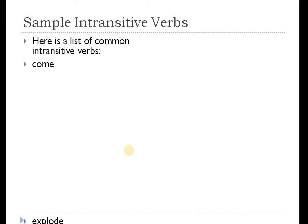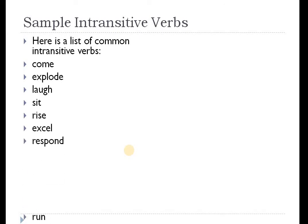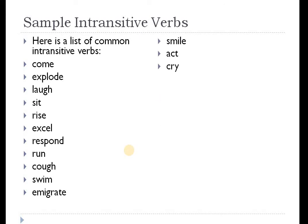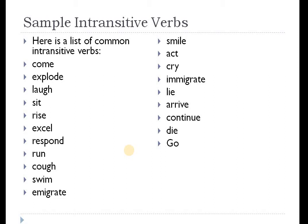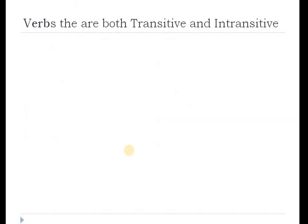Some examples of intransitive verbs: come, explode, laugh, sit, raise, excel, respond, run, cough, swim, immigrate, smile, act, cry, lie, arrive, continue, die, go. You'll notice that some of these verbs also appear to be action verbs. So you're going to see a lot of overlap among the different types of verbs. We know there are exceptions — some verbs can be both transitive and intransitive, and this is dependent on your meaning.